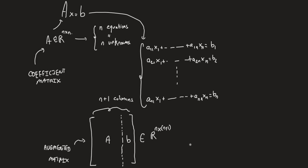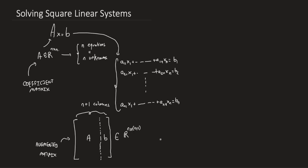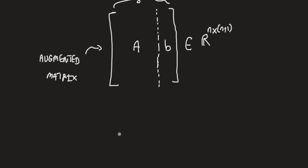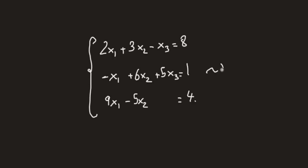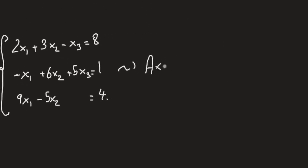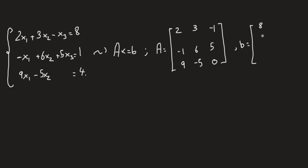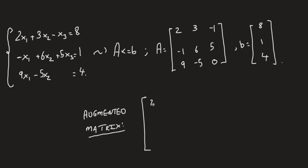Now, what we're going to explain is how to solve any square system of linear equations AX equal B using the so-called Gaussian elimination process. As an example, consider the following 3 by 3 system, which could be set as AX equal B, where A contains the coefficients and vector B contains the values on the right-hand side: 8, 1, 4. We can set the augmented matrix by copy-pasting the values of A, and then the vector B in the last column.